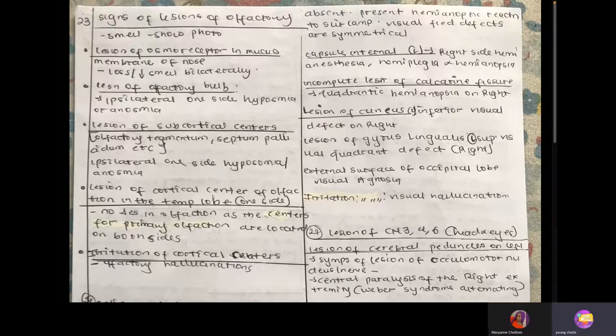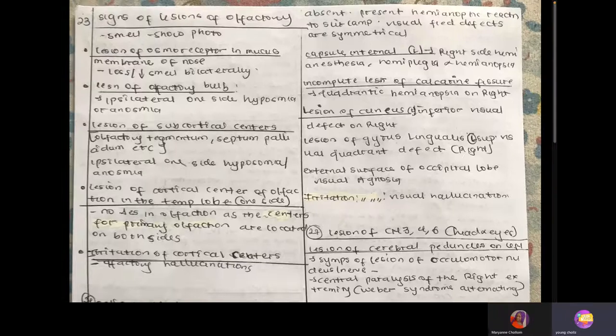If there's lesion of the cortical center, you're going to see no change in olfaction. If there's lesion in one side of the cortical center, you're not going to see any change in smell, because we have both centers that process smell. Then there's irritation of the cortical centers causing olfactory hallucinations.